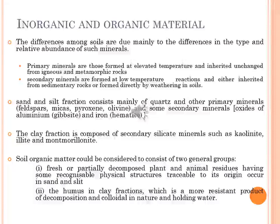Differences among soils are basically due to differences in the type and relative abundance of minerals. Minerals are naturally occurring inorganic compounds having definite crystalline structures. They are classified into primary and secondary minerals. Primary minerals are those formed at elevated temperatures and remain unchanged from igneous and metamorphic rocks. Secondary minerals are formed at low temperature reactions and are either inherited from sedimentary rocks or formed directly by weathering in soil.